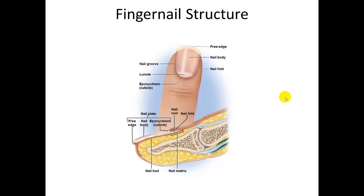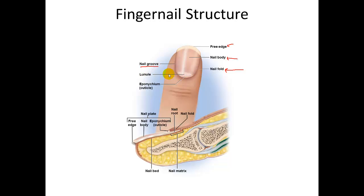Here is a figure showing the fingernail structure: the free edge, the nail body which is directly underneath the nail itself, the nail fold which is that folded skin around the nail. You can see the groove, the lunule which is that whitish portion of the nail, and the cuticle right here.